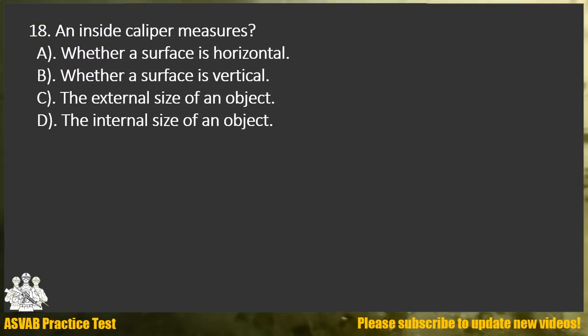Question 18. An inside caliper measures: A. Whether a surface is horizontal. B. Whether a surface is vertical. C. The external size of an object. D. The internal size of an object.